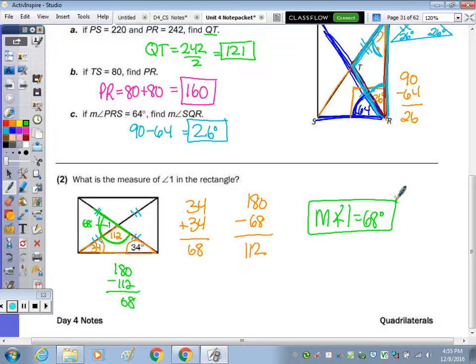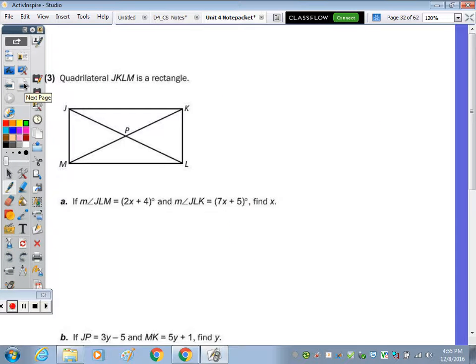On the back side, we have rectangle JKLM. Angle JLM is 2x plus 4, right here. And angle JLK is 7x plus 5, this angle right here. Given these two angles in the corner of a rectangle, we know they should add up to 90 degrees.